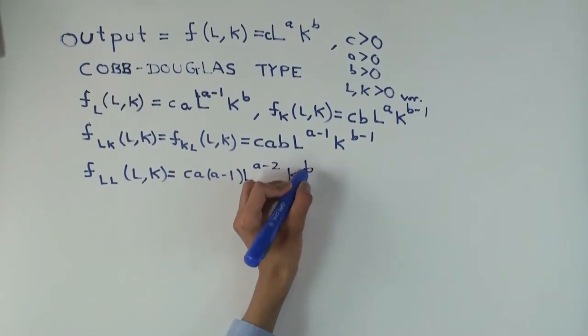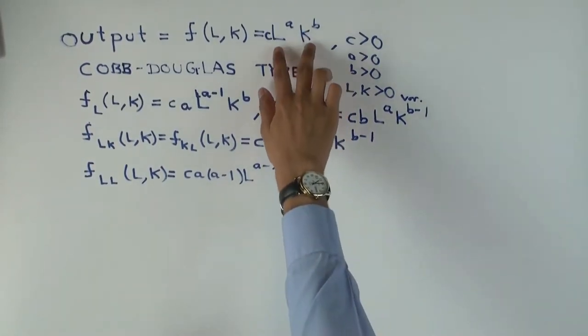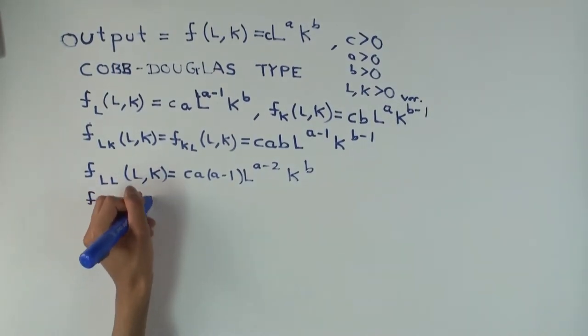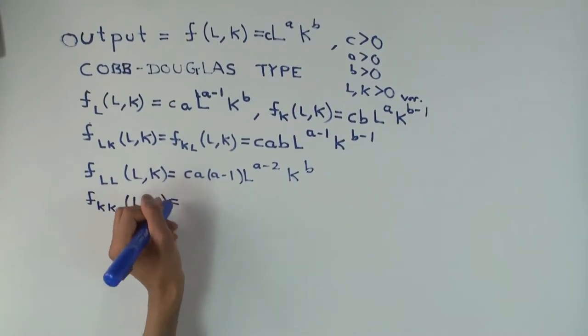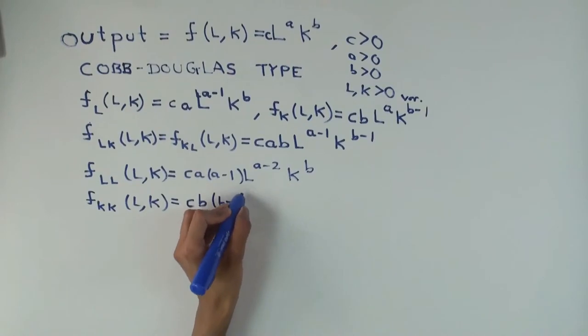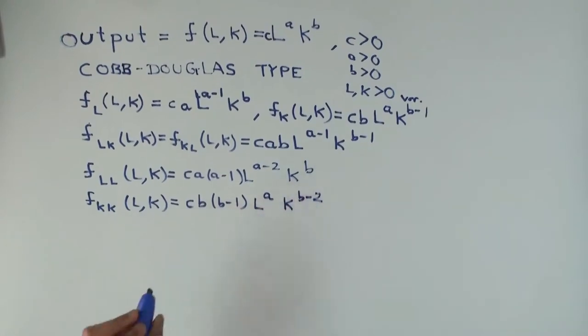Okay, that's good. This part remains unaffected and this part just gets differentiated. That's how multiplicatively separable things work, each piece gets differentiated with respect to its variable. For f sub KK, we get c times b times (b minus one) times L to the a times K to the b minus two. So we have all these partials.